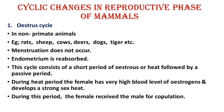During the heat period, the female receives the male for copulation. The most important point is that in non-primates such as rats, sheep, cow, deer, dogs, and tiger, the endometrium is reabsorbed rather than shed.